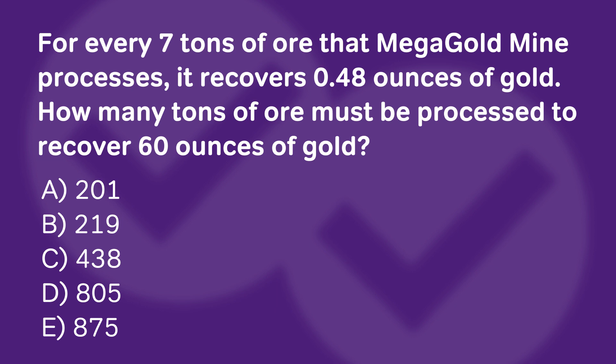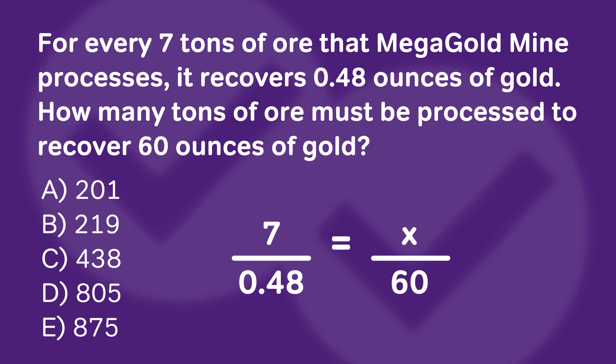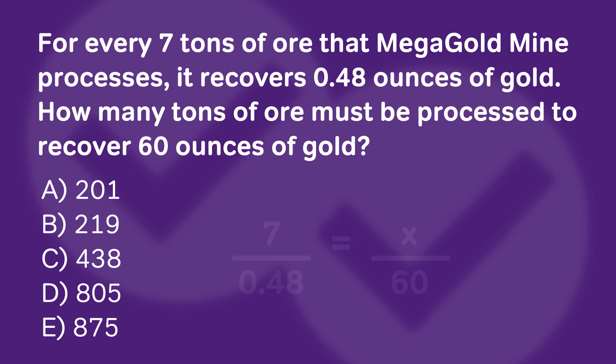Our first instinct might be to set up a ratio, and there's nothing wrong with that. We would put 7 over 0.48, then equals X over 60, and we have to do a little bit of math. But a quick mental math way of doing it is asking yourself: what number times 0.48 will get you to 60?